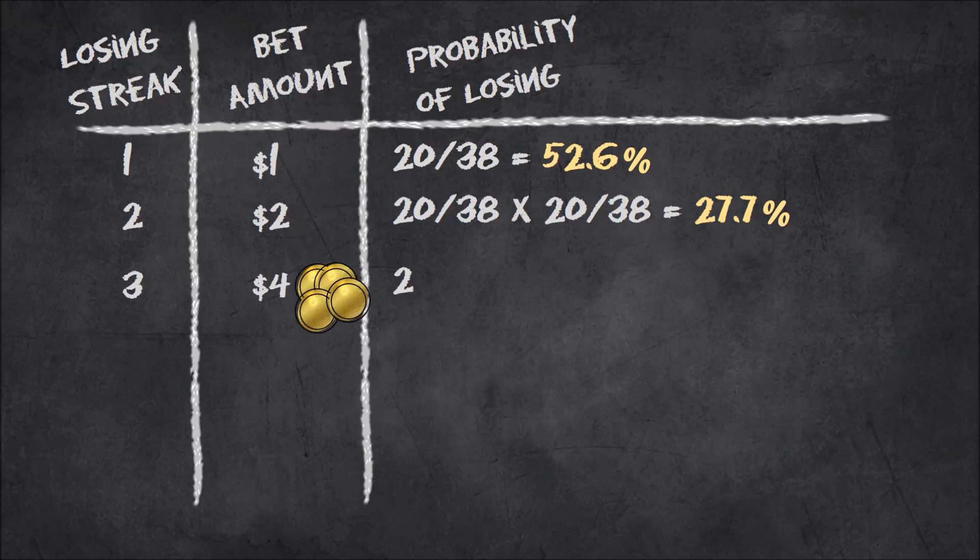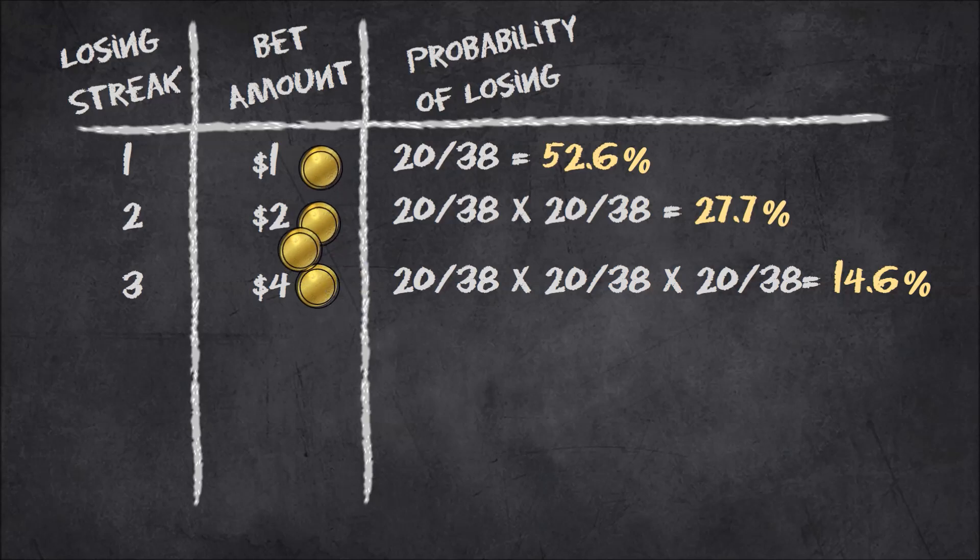Now, if we lose a second time, we move up the ladder again and double our bet to $4. The probability of losing this time is even lower at about 14.6% because it's a lot harder to lose three times in a row. Again, if we win, $3 will be used to cover our previous losses, and we'll pocket a dollar and restart our bet at $1.